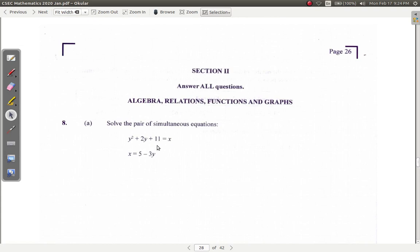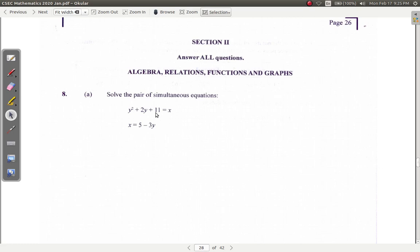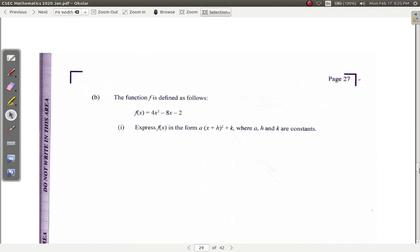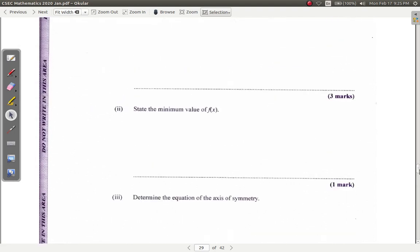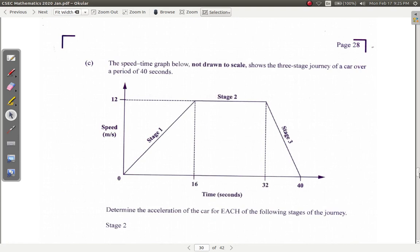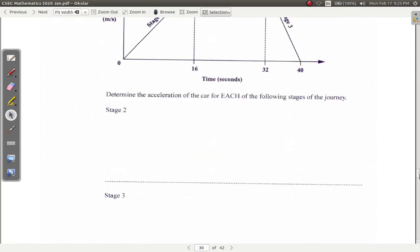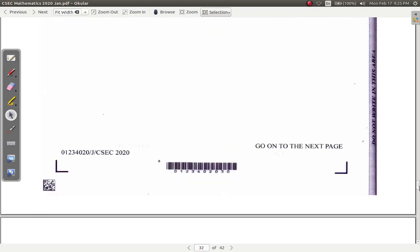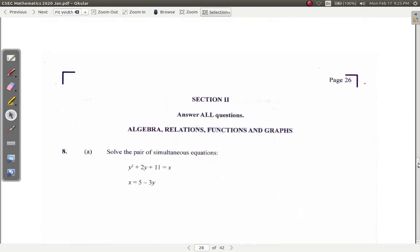You must solve this pair of simultaneous equations - not the ordinary simultaneous equation because one of them is quadratic. Then function f is defined: express f in terms of a plus h squared plus k. State the minimum value of f(x) and determine the equation of the axis of symmetry. Then you have a velocity time graph. You have three stages of the journey - determine the acceleration at each stage. That's question 8.